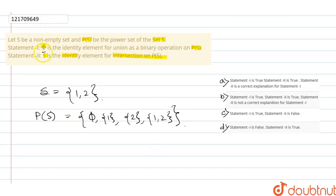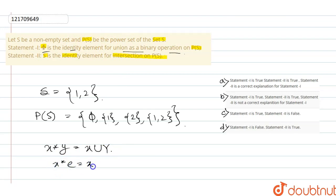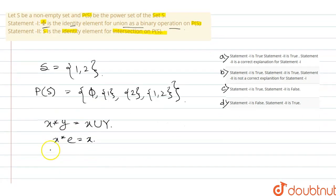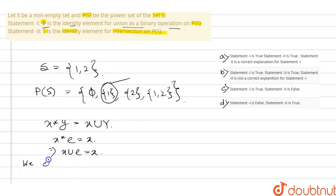It is stated that ∅ is the identity element for union as a binary operation. So our binary operation is x ∘ y = x ∪ y. For identity element e, the condition is x ∘ e = x, which means x ∪ e = x. We choose any particular element — say we choose {1}.